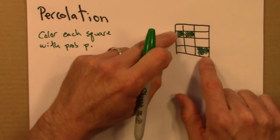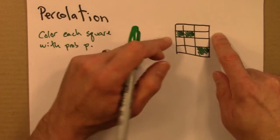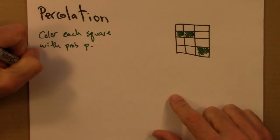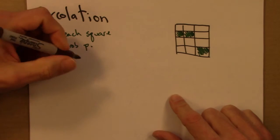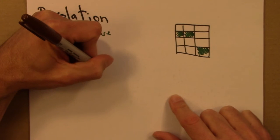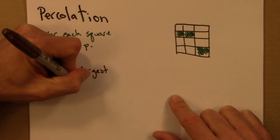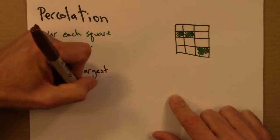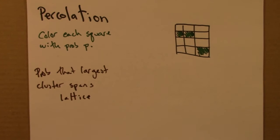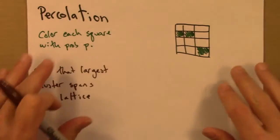So there are some questions that we could ask about this. We could say, what's the probability that the largest cluster spans the lattice? Meaning that it goes from one side to another. Again, in the limit that the lattice gets very, very large.